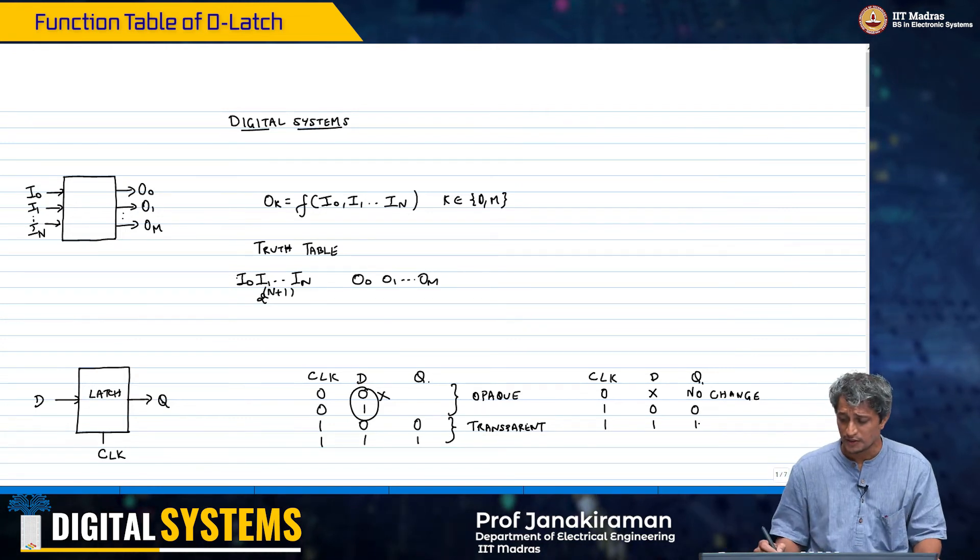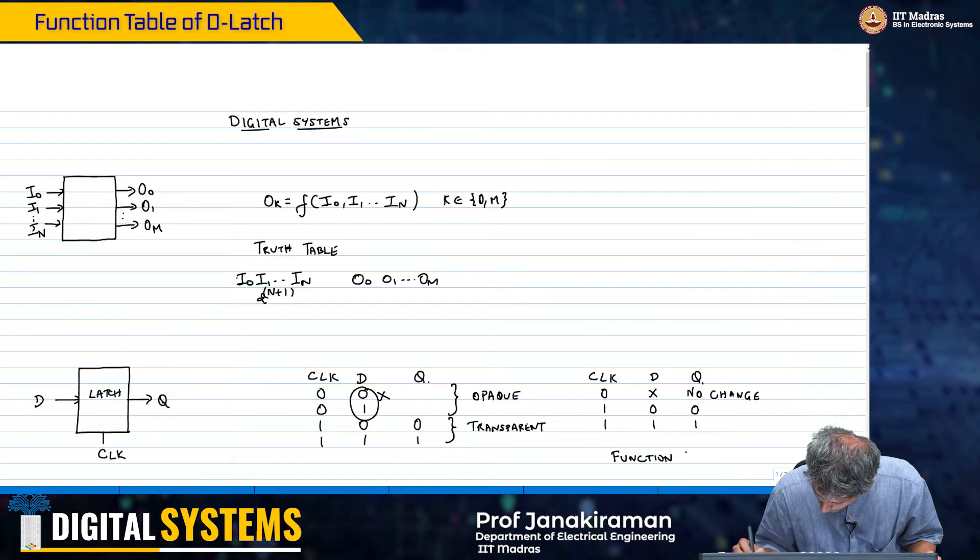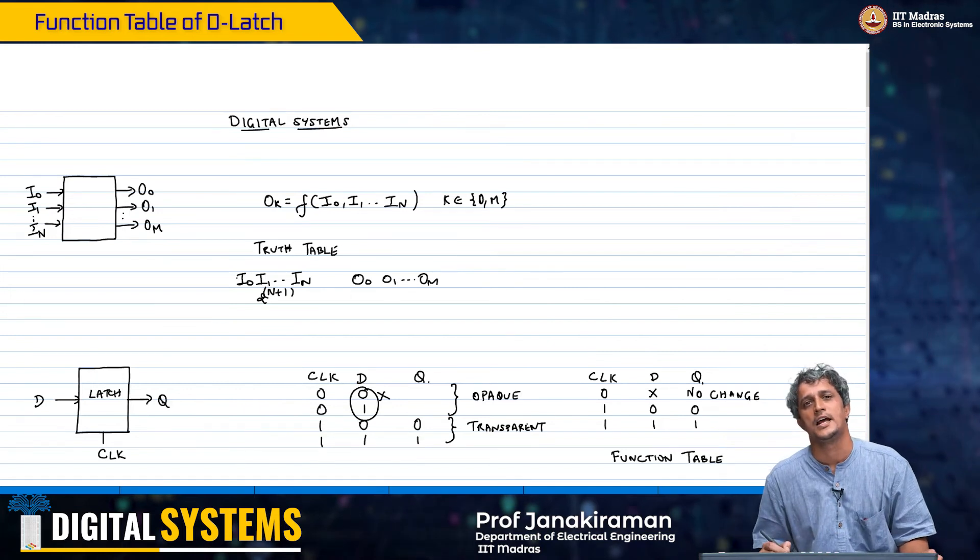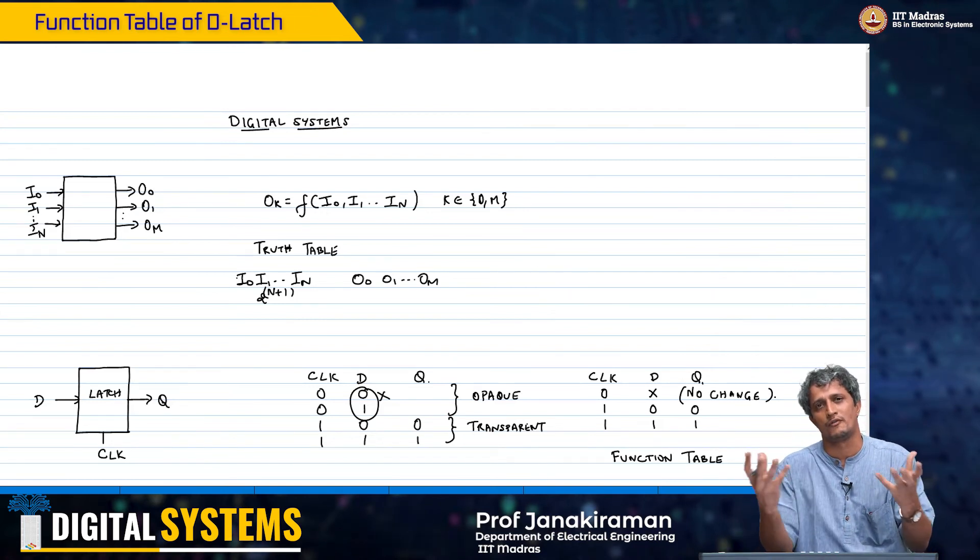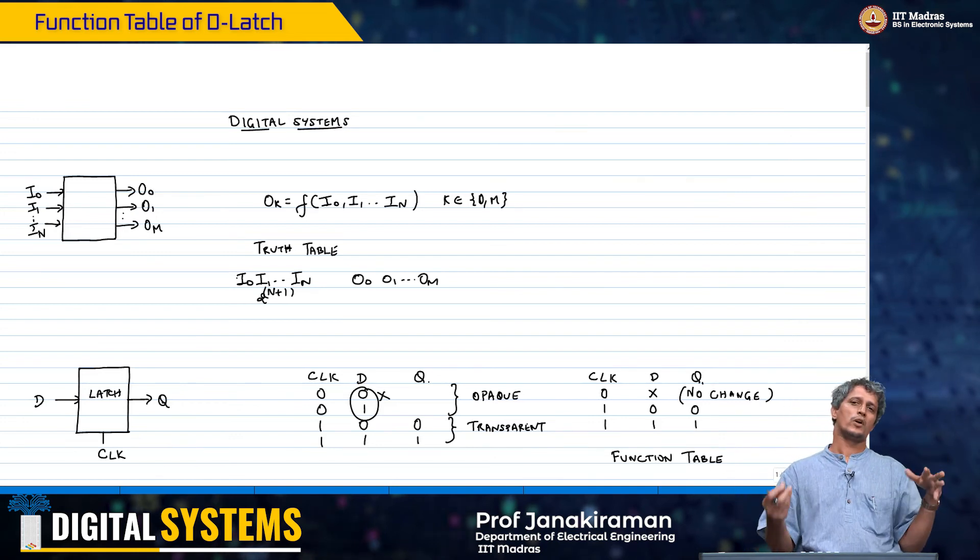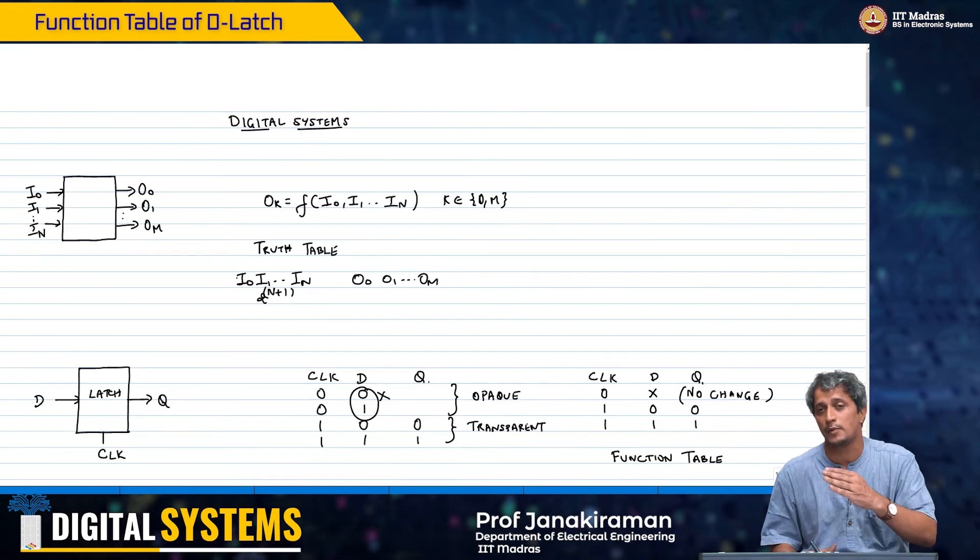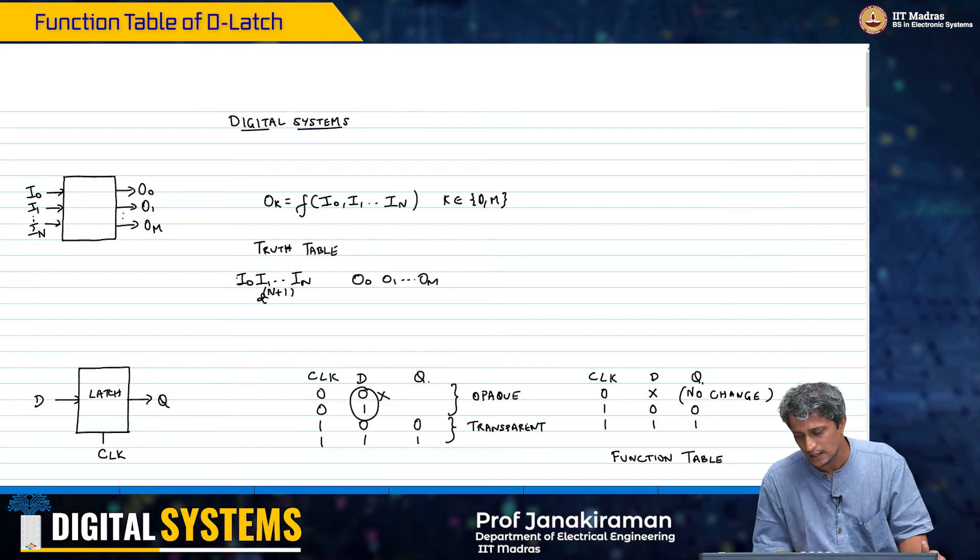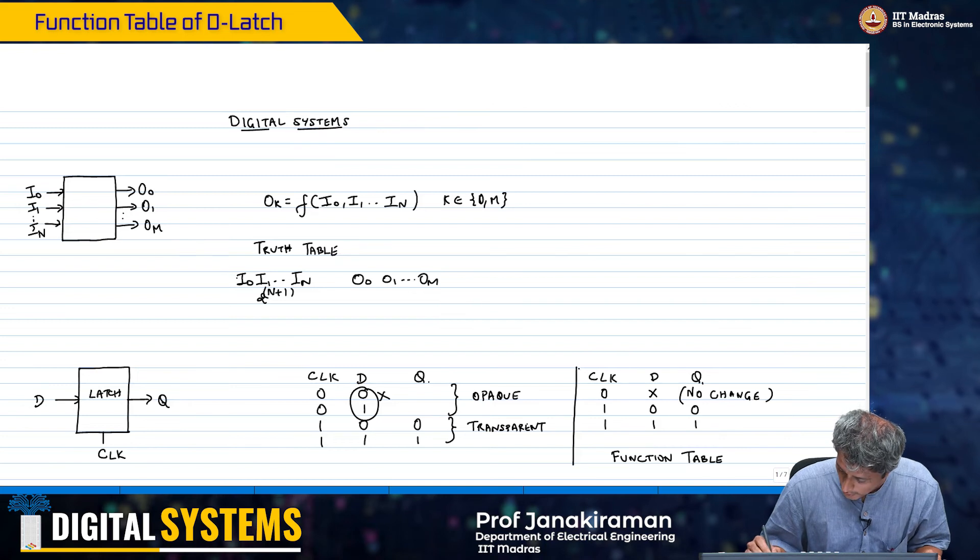Therefore, this is what we will call the function table of this D latch. This is a loose way of writing it, but it sort of conveys the key message because we do not want to say if the previous state was 0. That also we will come to later, by the way, we will describe it in terms of its previous state and current state and all that.